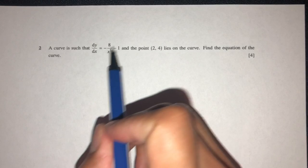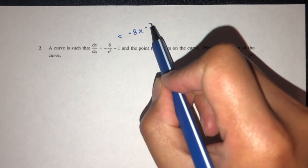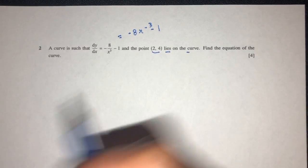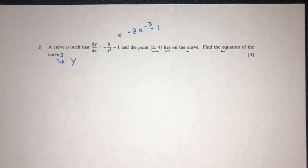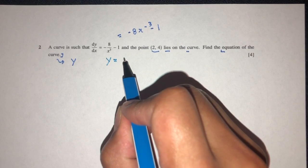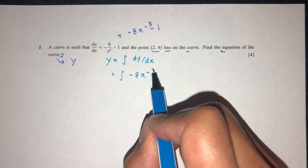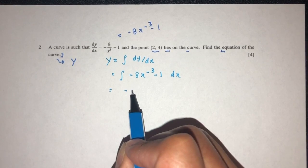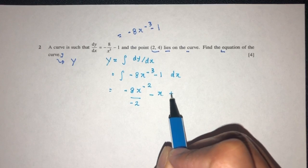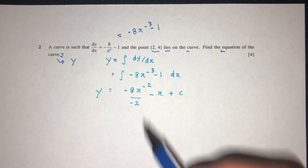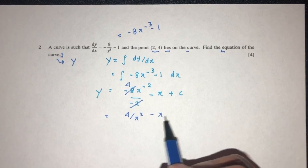A curve is such that dy/dx is given to you. The first thing I can do is rewrite the equation: that will be minus 8, we can bring the x up, that should be x power minus 3 minus 1. The point (2, 4) lies on the curve. We have to find the equation of the curve. The equation of the curve is simply finding the value of y, so y will be equal to the integration of dy/dx.